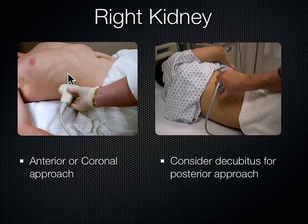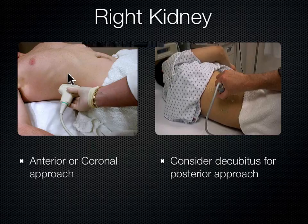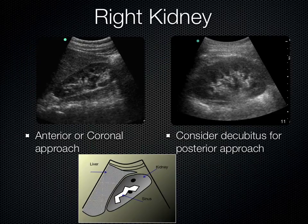If you can't get a good view from the front, you can roll the patient onto their side — decubitus — and look between the ribs from a posterior approach, which sometimes shows the kidney a little better. Every patient is different.